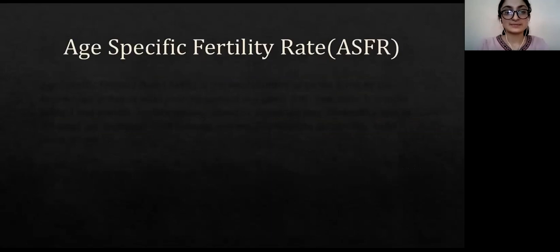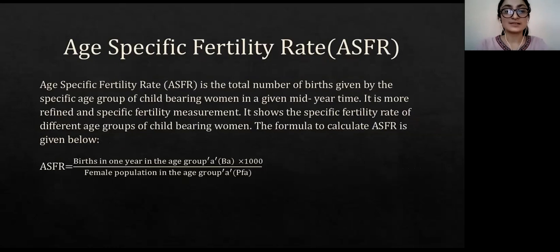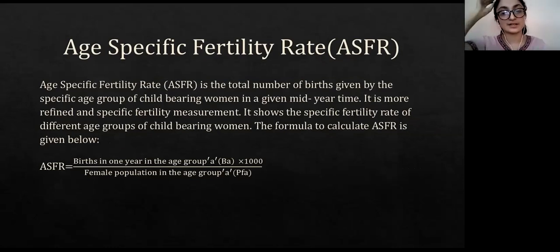Age-specific fertility rate is the total number of births given by a specific age group of childbearing women in a given mid-year time. It is more refined as a specific fertility measurement. It shows the specific fertility rate of different age groups of childbearing women. The formula to calculate ASFR is: births in one year in age group A divided by female population in age group A, multiplied by 1,000.